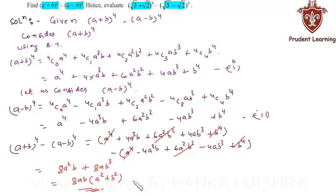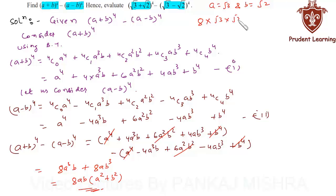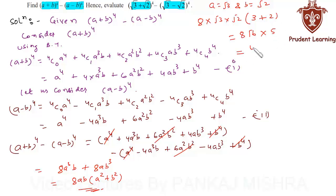To find the value of this quantity, we substitute a = √3 and b = √2, which gives us 8 × √3 × √2 × (√3² + √2²) = 8 × √6 × (3 + 2) = 8 × √6 × 5 = 40√6. So the value of this expression is 40√6, and this completes our solution.